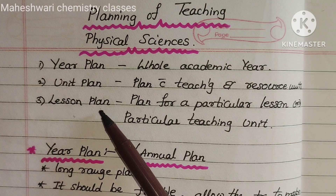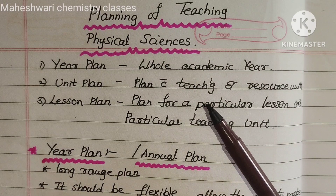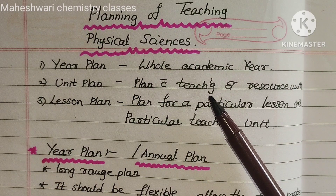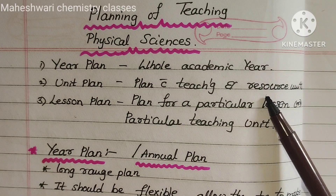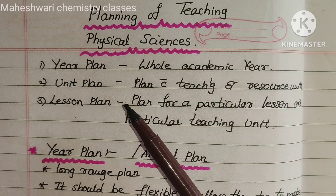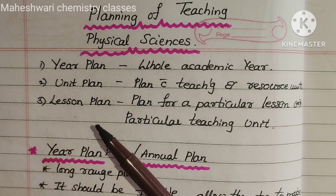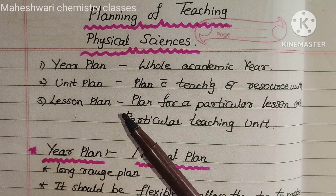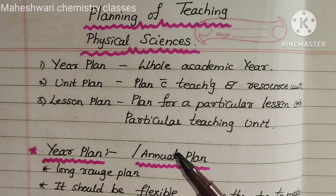The Unit Plan covers just a unit, while the Lesson Plan covers a specific topic — for example, Light or Magnetism.